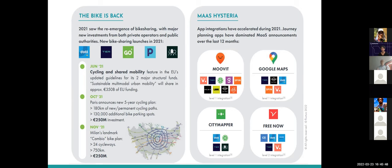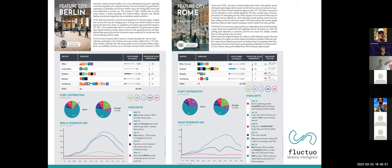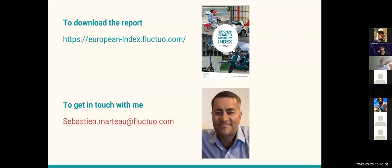The European Shared Mobility Index covers four cities in depth every quarter. I invite you to look at the city in-depth analysis for interesting market dynamics insights. All four quarterly reports can be downloaded for free from our European index page at index.fluctio.com — just enter your details and we'll send them to you. I hope you'll enjoy the reports and I'll be happy to answer any further questions. Thank you so much for your time.